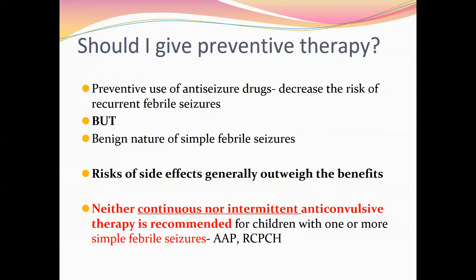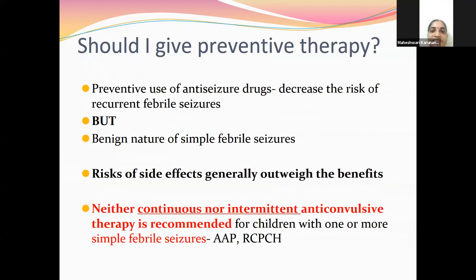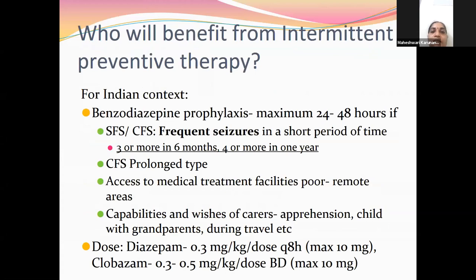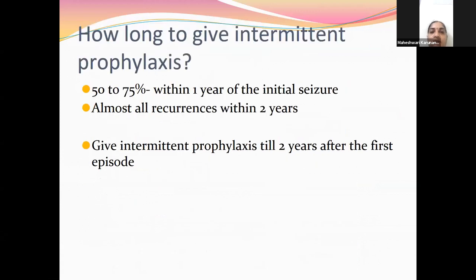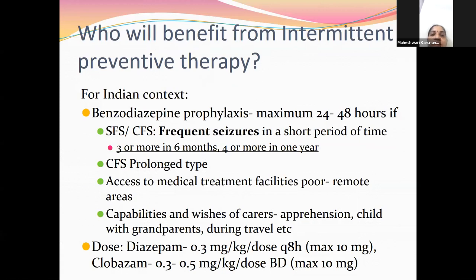Regarding preventive therapy — anti-seizure drugs: intermittent prophylaxis definitely decreases the risk of recurrent febrile seizures. However, since simple febrile seizures are benign, whether to give intermittent prophylaxis is questionable. Indications include: frequency of three or more seizures in six months or four or more in one year; or complex febrile seizures — particularly prolonged type; associated focal neurological deficit after the episode; patient without access to medical care in a remote area; excessive parental apprehension; or the child staying with grandparents or during travel.